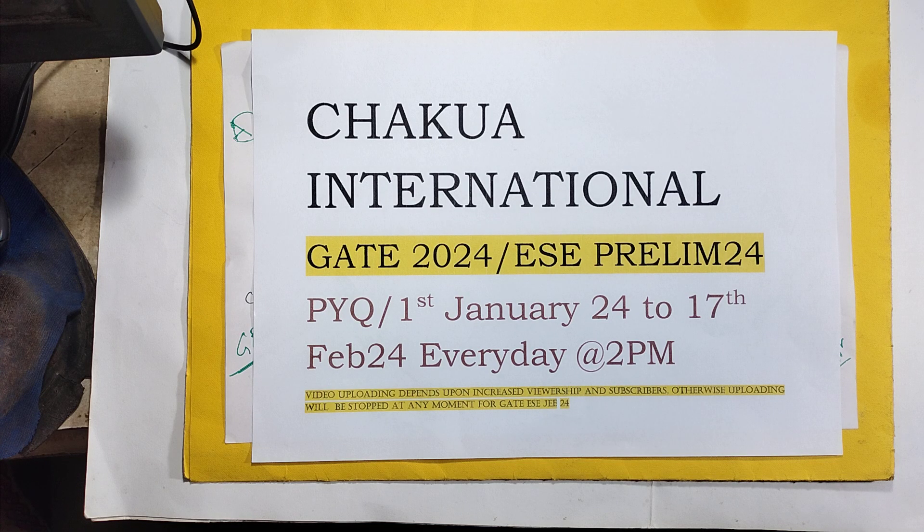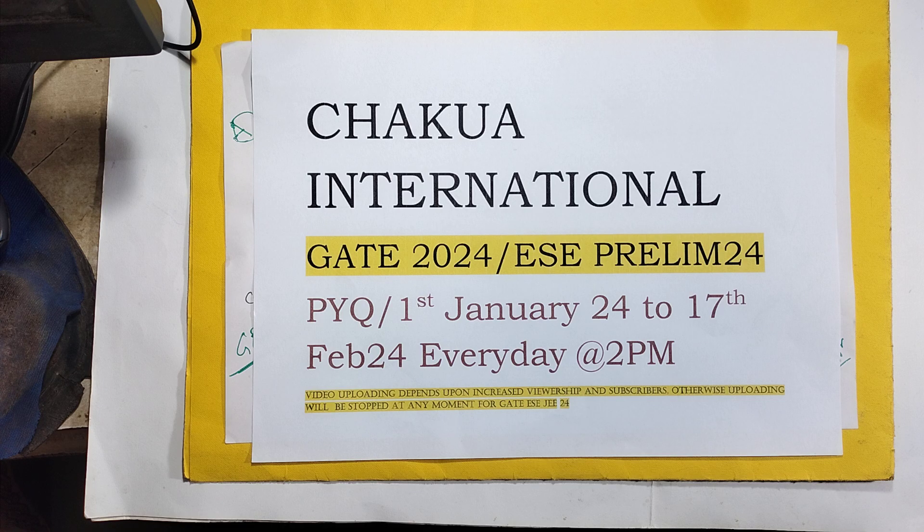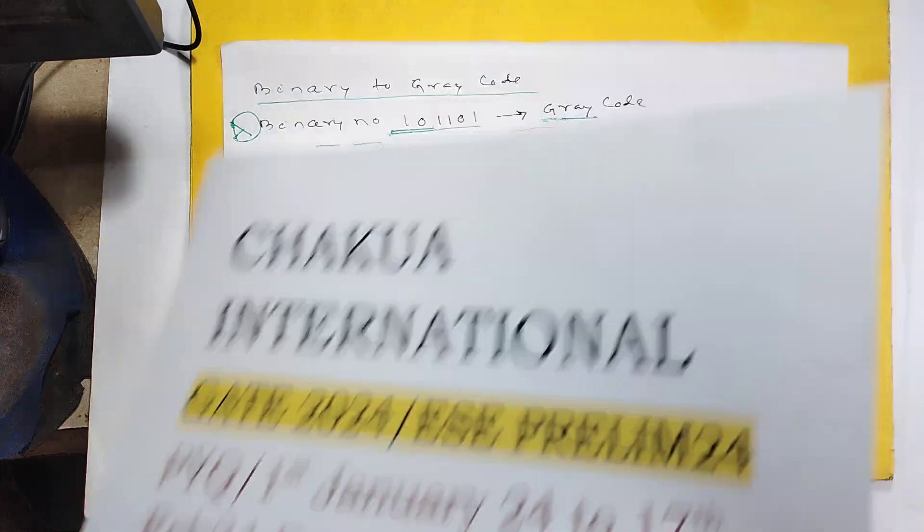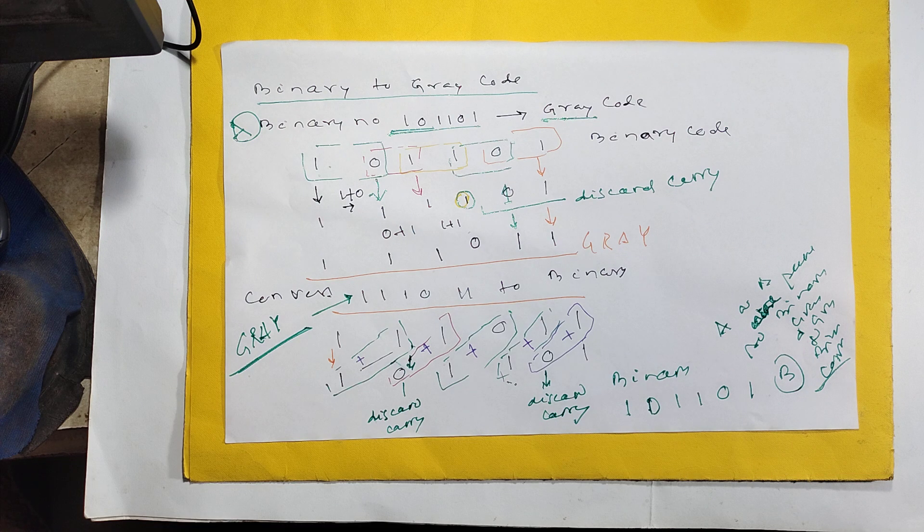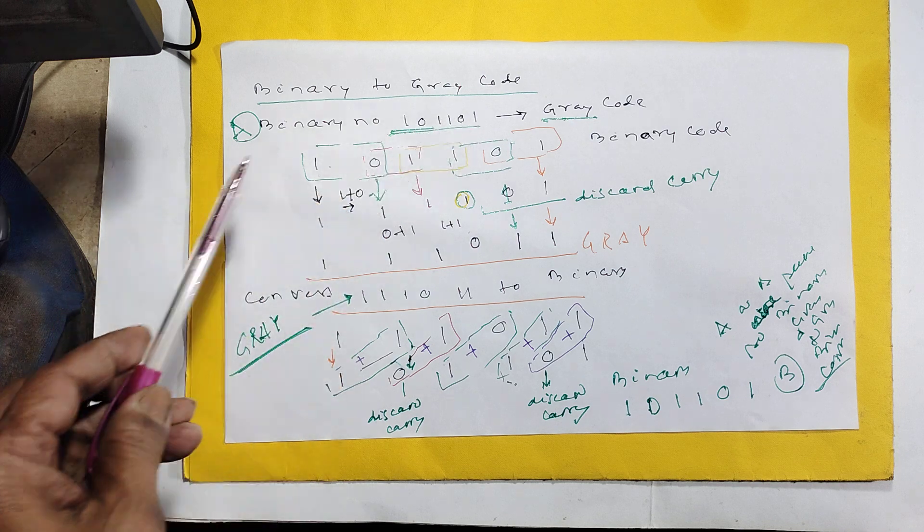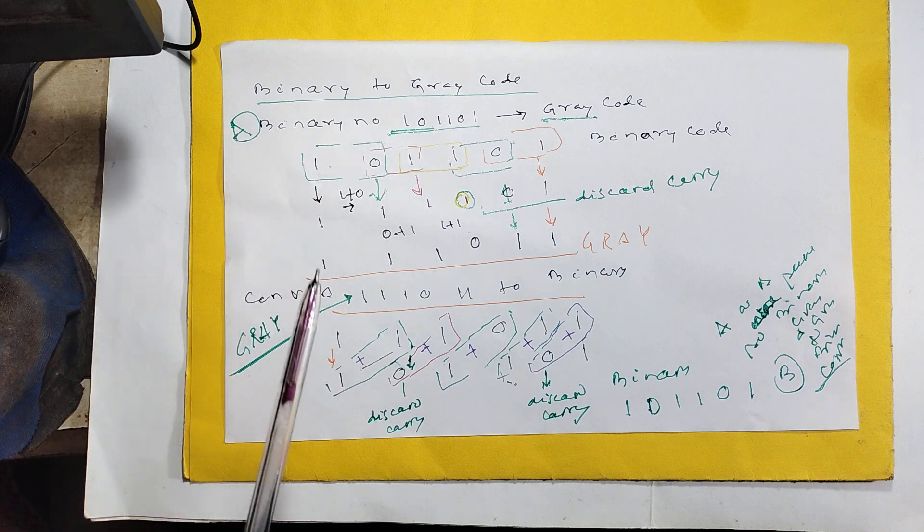This is the digital electronics Gate 2024 and ESE Prelims. We have a related video since August 21. This is the conversion binary to gray code. Binary number 101101 to convert to gray code.